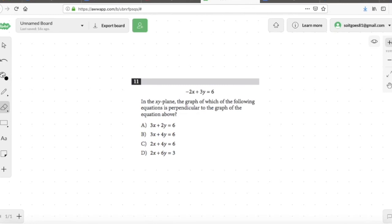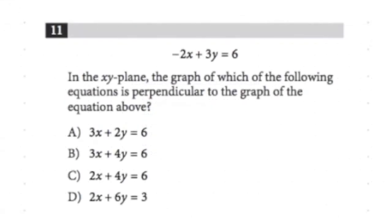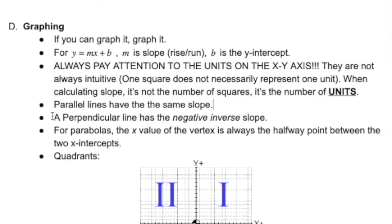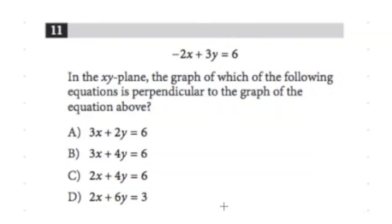Let's keep rolling — question number 11. Go ahead and read this one for me, Nicole. Negative 2X plus 3Y equals 6. In the XY plane, the graph of which of the following equations is perpendicular to the graph of the equation above? On the rules for math, a perpendicular line has a negative inverse slope. Inverse means flipping the numerator and denominator. So if one line has a slope of 2, the perpendicular line would have a slope of negative 1 over 2.